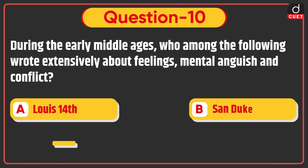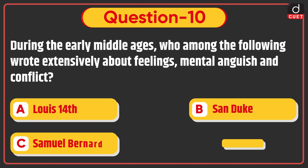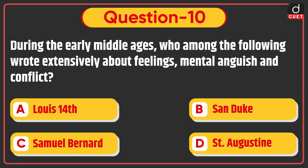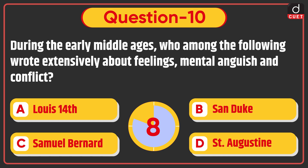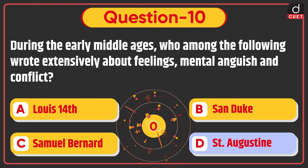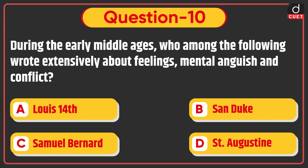During the early Middle Ages, who among the following wrote extensively about feelings, mental anguish, and conflict? Louis XIV, St. Dioc, Samuel Bernard, or St. Augustine? The correct answer is option D: St. Augustine.